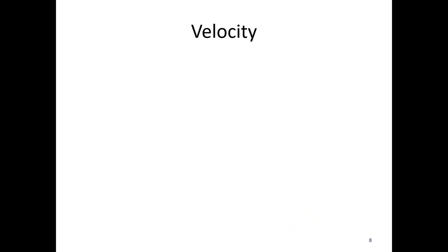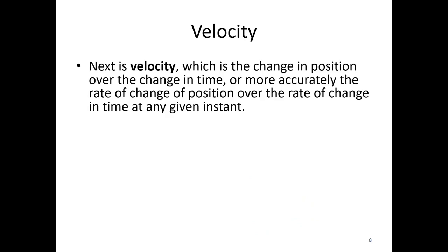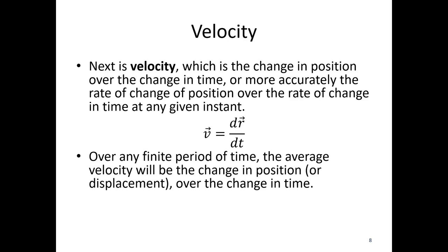Next is the concept of velocity. Velocity is the rate of change of position over the rate of change of time. Our velocity vector is the derivative of the position vector r with respect to time — this is where calculus starts to come into dynamics. Over any finite period of time, the average velocity is the change in position, or displacement, over the change in time: delta r over delta t, where delta r is displacement and delta t is the time between time one and time two.